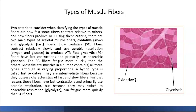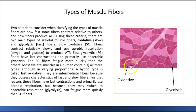For example, the gastrocnemius, which is for jumping, will have more of the light (fast) fibers. The soleus, which allows you to stand up for long periods of time, will have more of the dark (slow) fibers.